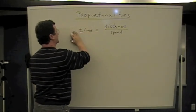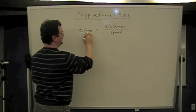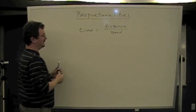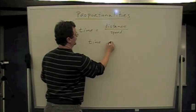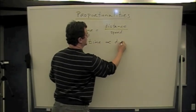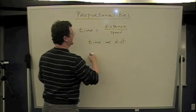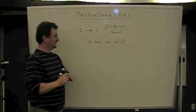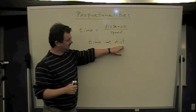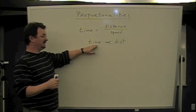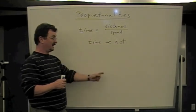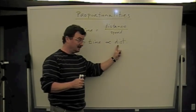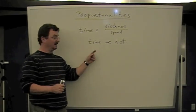That's what we call a direct proportion. We say that as long as the speed remains the same, that time is proportional to distance. Time is proportional to distance. So if you have three times the distance, it'll take you three times as long. If you have twice the distance, it'll take you twice as long. If you only have half the distance, it'll only take half as long.